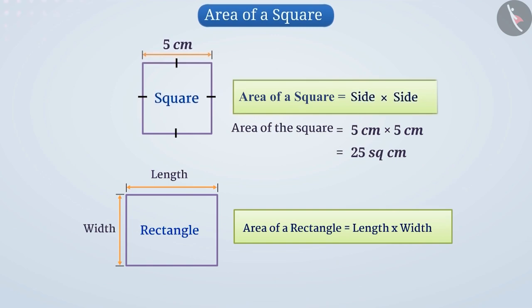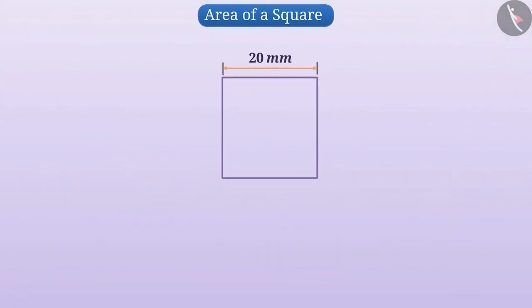Now, will you be able to find the area of a square with side 20 mm? Try it. Let me tell you how. We know that the area of a square is side multiplied by side. Therefore, here the area of the square will be 20 mm × 20 mm, which equals 400 mm².